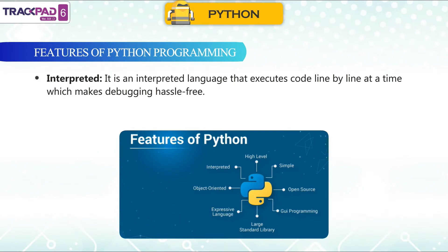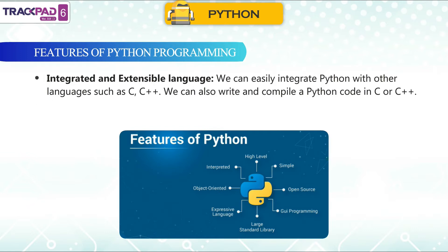Libraries and tools make programming in Python easier, as they simplify even complicated tasks. Python is also an interpreted language that executes code line by line, which makes debugging hassle-free. Additionally, Python is an integrated and extensible language — it can easily be integrated with other languages such as C and C++, and code can also be written and compiled in C or C++.